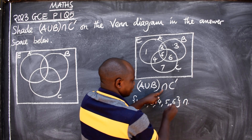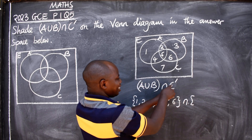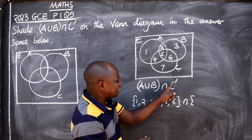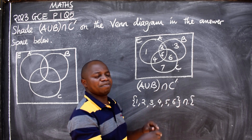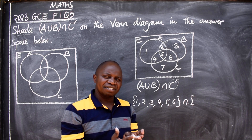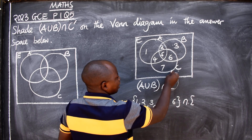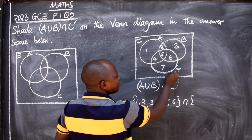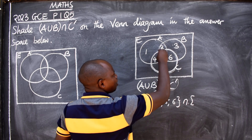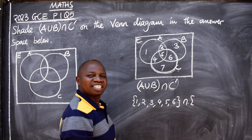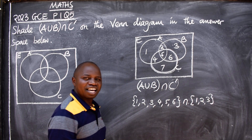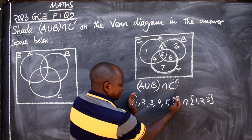Next, we have the intersection with C complement. What does C complement mean? It means elements that are NOT in C — elements outside C. Now let's look at set C. We want elements that are not in C. Those elements are 1, 2, and 3 — those are the elements outside C. So C complement = {1, 2, 3}.